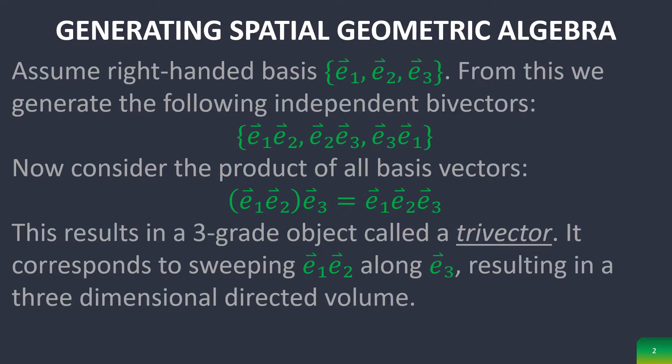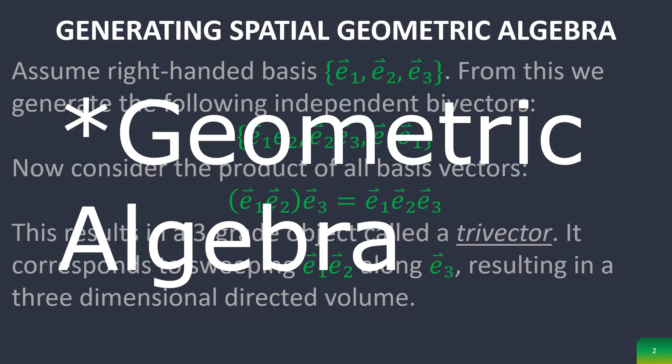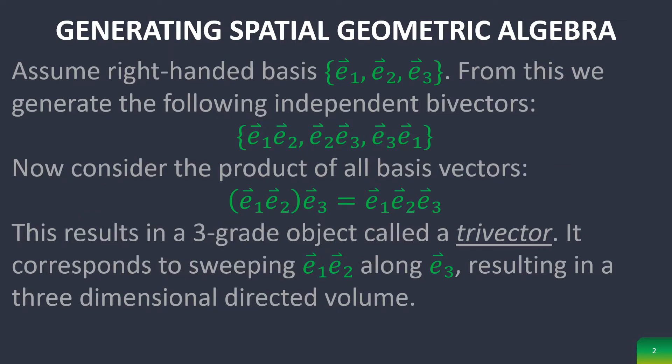and then if you product together all of the basis vectors, you can create what's known as a trivector, which you'll see that this is the pseudoscalar of spatial geometry. This trivector corresponds to sweeping the bivector E1, E2 along the vector E3, which results in a three-dimensional directed volume.